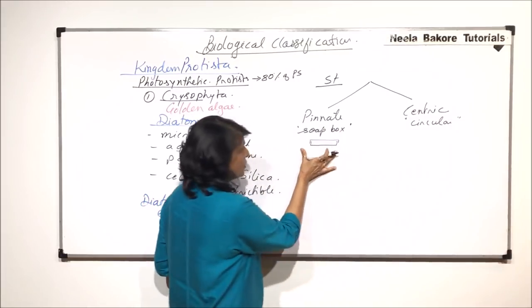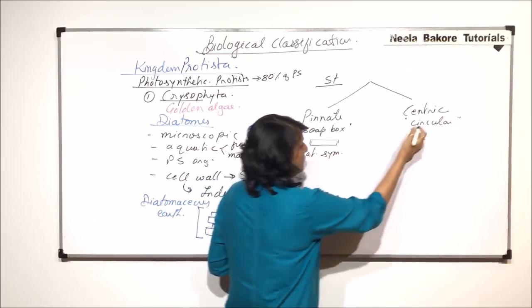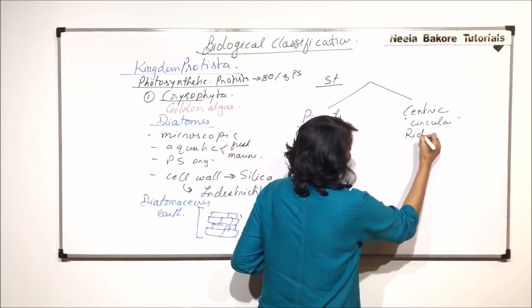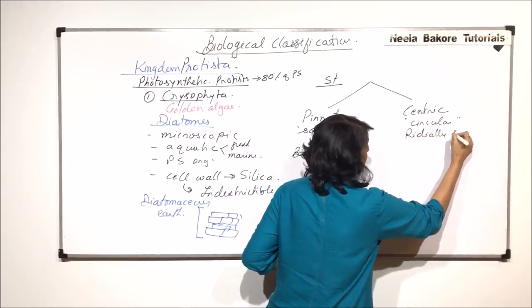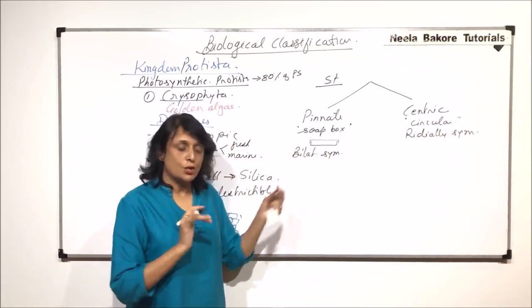The only difference is, if it is soap box type, we call it bilaterally symmetrical. And if it is circular, we call it radially symmetrical, on the basis of the shape.